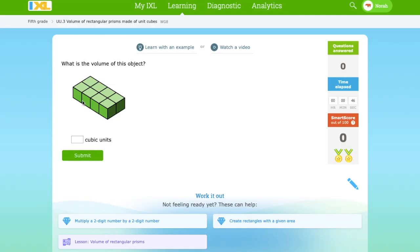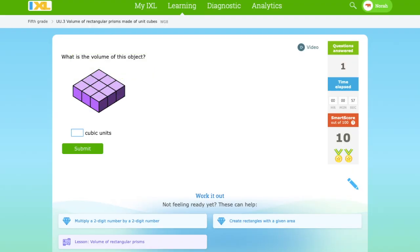So here I want to count this: 1, 2, 3, 4. Then there's 2 blocks here. 4 times 2 is 8. There's 8 cubic units. See? That was really easy.